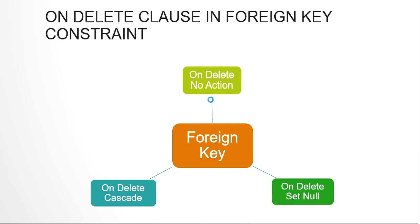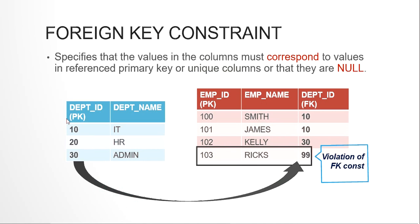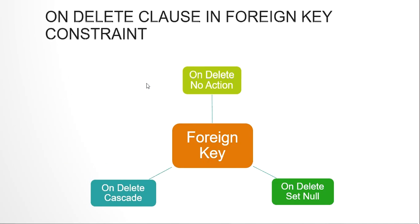When we create a foreign key and try to insert data into the child table that's not present in the parent, we get a 'parent not found' error. Also, if you try to delete a record from the parent table — say department ID 10 — and that department ID 10 is present in the child employees table, you get a 'child record found' integrity constraint error. This is the default ON DELETE NO ACTION behavior.